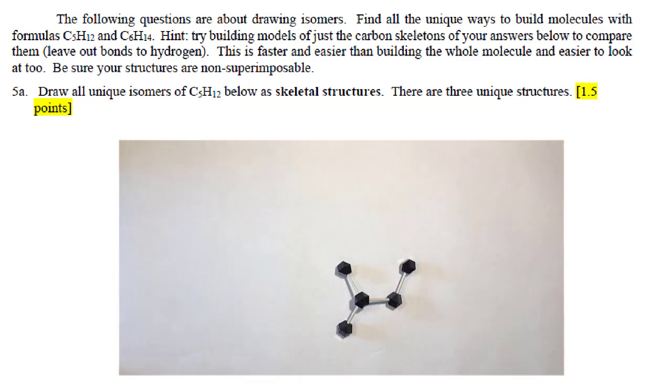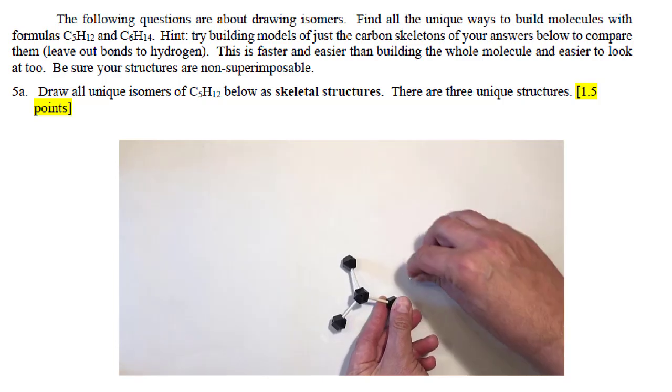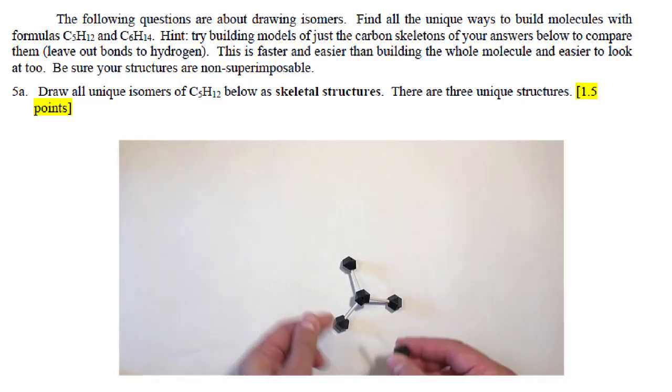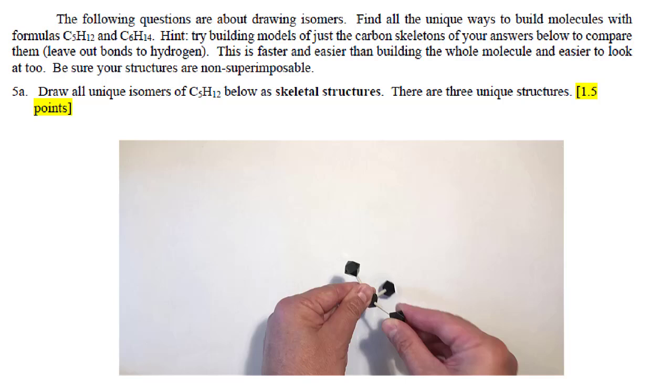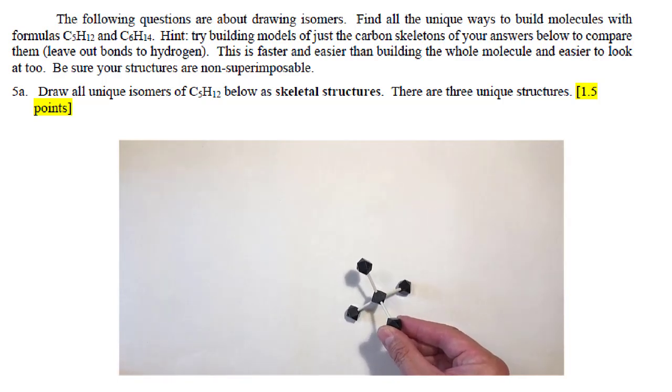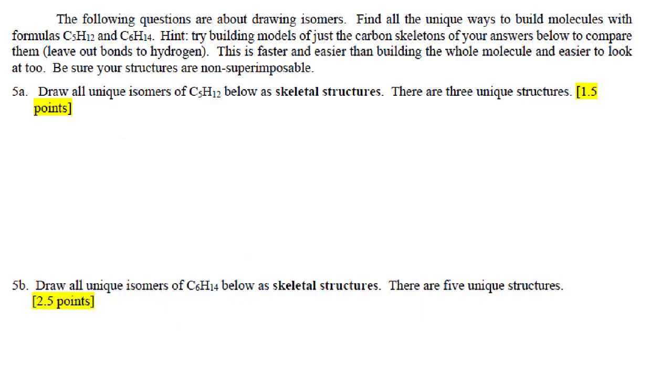To generate another unique molecule, we're going to have to again change the connectivity of this molecule. We'll pluck a CH3 group off the end and introduce another branch in the middle. This molecule is the third unique isomer of C5H12. It's a three-carbon chain with two branches, two CH3 groups in the middle. You can use the same strategy now to answer question 5b and find the unique isomers of C6H14.